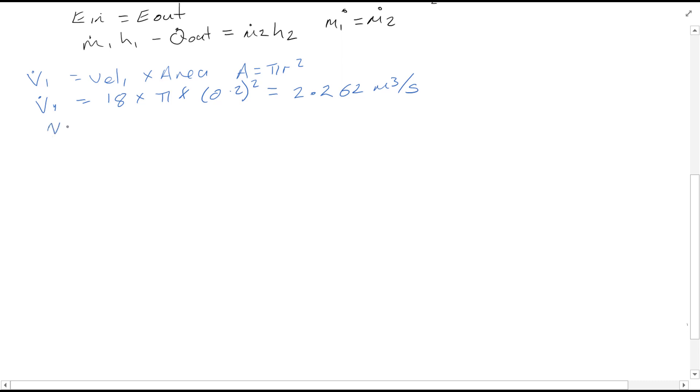From the chart previously, we found that V1 was equal to 0.876. We know that specific volume is equal to the volume over mass, or volume flow rate over mass flow rate. So 2.2628 divided by 0.876 will give us, working out the units, 2.582 kilograms per second. That's your mass flow rate.